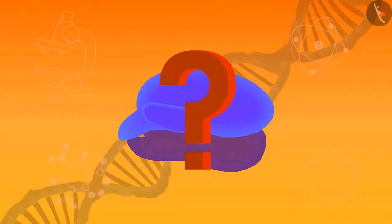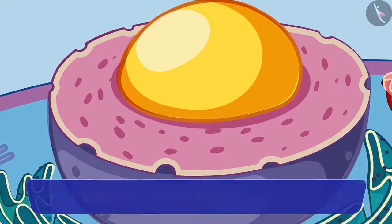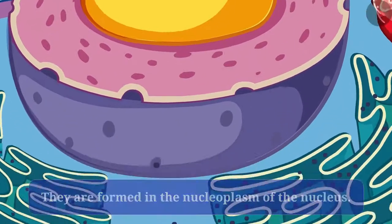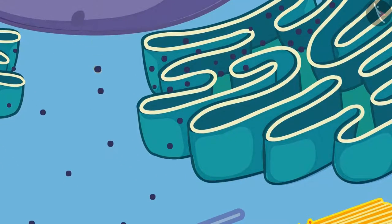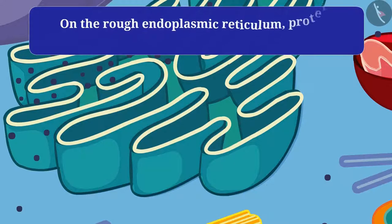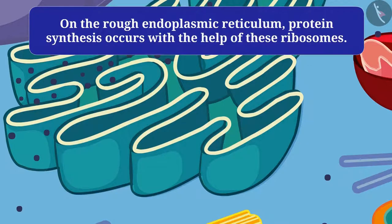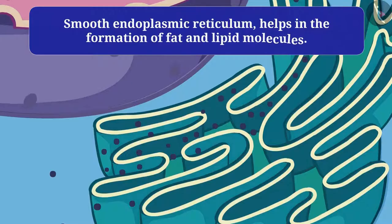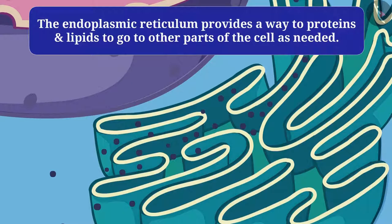Ribosomes are made up of ribonucleic acid and protein. Their main function is protein synthesis. They are formed in the nucleoplasm of the nucleus, and after getting formed they come out through the nuclear pores and stick to the endoplasmic reticulum, which is then called rough endoplasmic reticulum. Protein synthesis occurs on the rough endoplasmic reticulum with the help of these ribosomes.